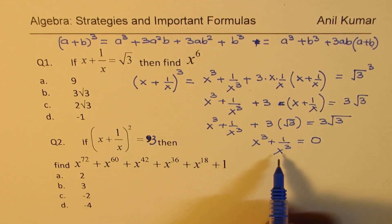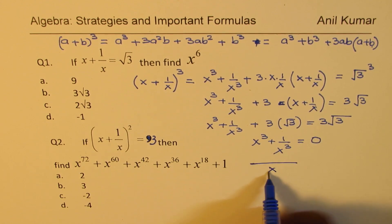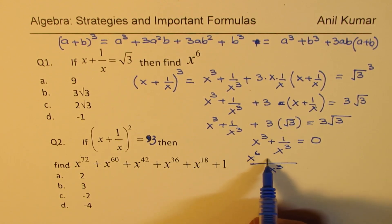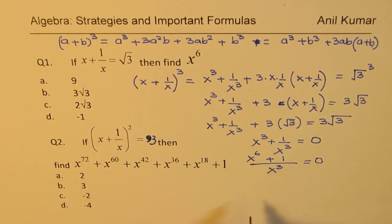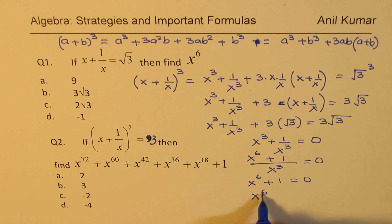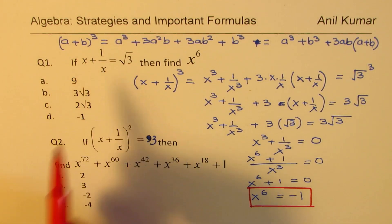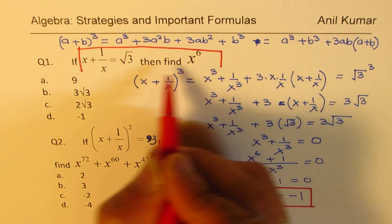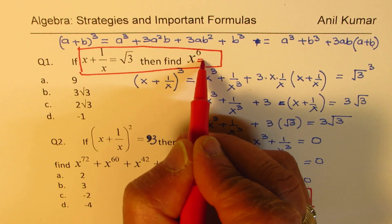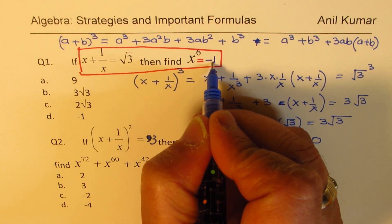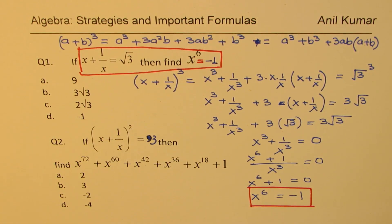To solve this equation, we take x cube as a common denominator. We get x to the power of 6 plus 1 equals zero. Since the denominator cannot be zero, that means x to the power of 6 is equal to minus one. So we get the result for x to the power of six. What we learn is that if x plus one over x is square root of three, then x to the power of 6 equals minus one. That is a very important result and the derivation is complete.